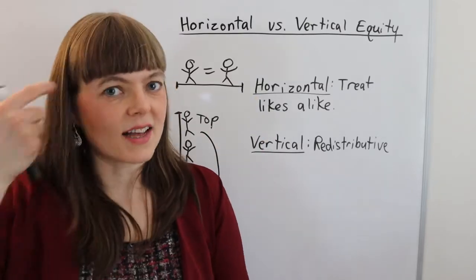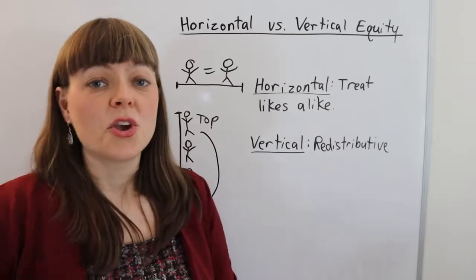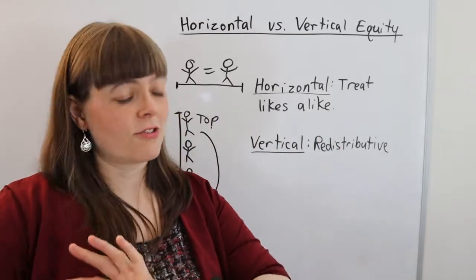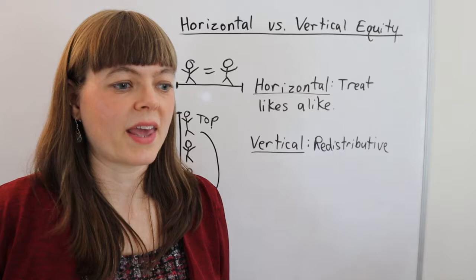Now, horizontal equity has a classic example: you have two janitors. They're the exact same age, they make the same wage,